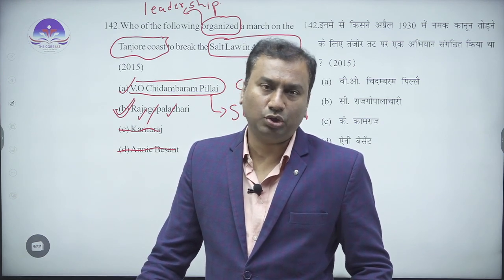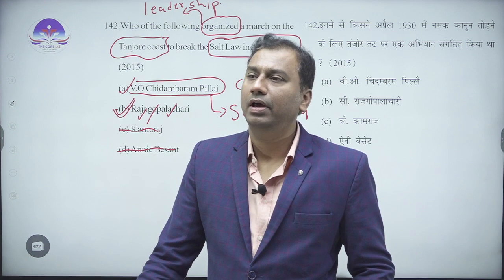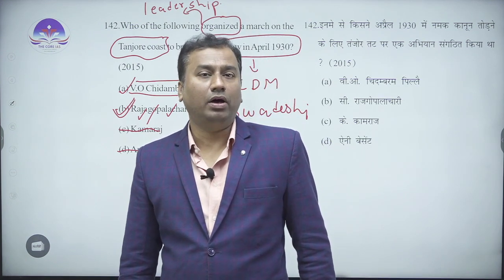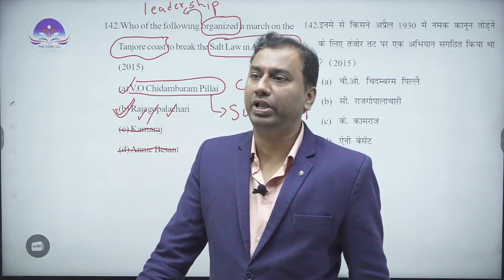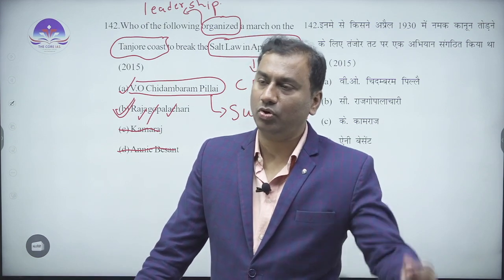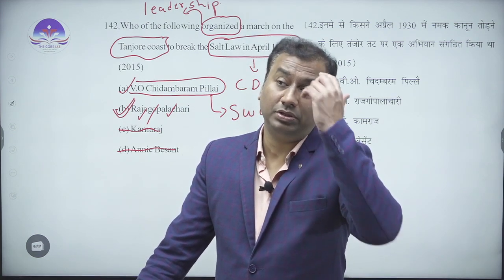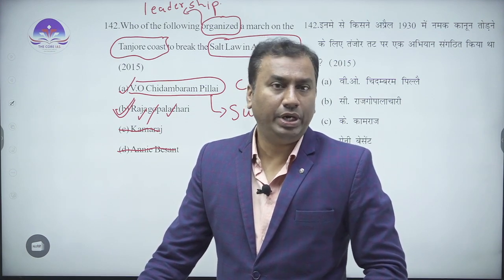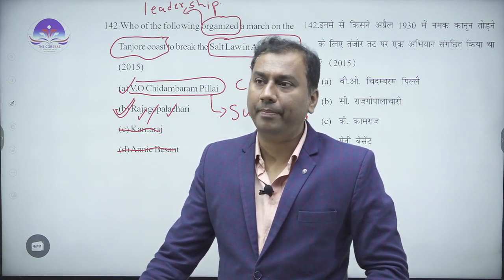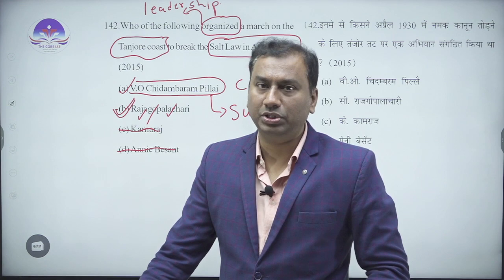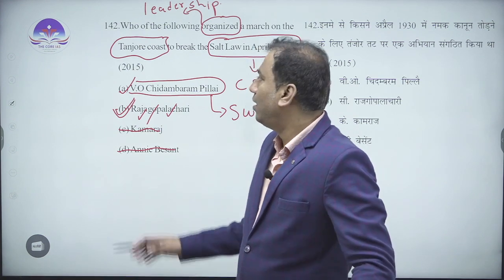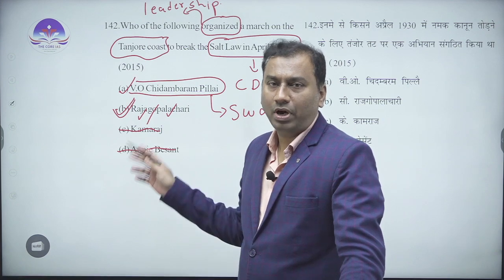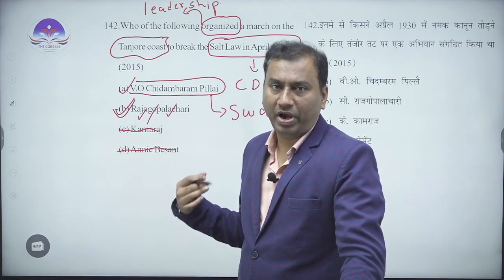C. Rajagopalachari is also famous for the 'Rajagopalachari Formula' of 1944, which was a proposal between the Congress and the Muslim League. The formula aimed to bring unity and argued that India's partition was not necessary. This is another important exam-oriented point about Rajagopalachari that should be remembered.